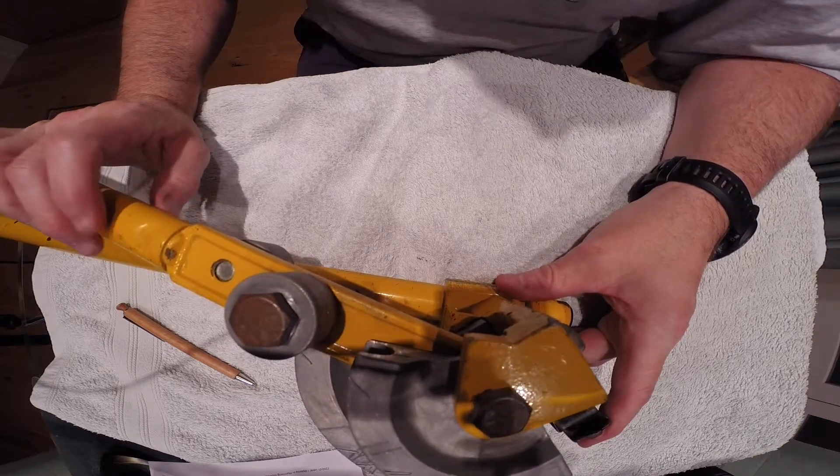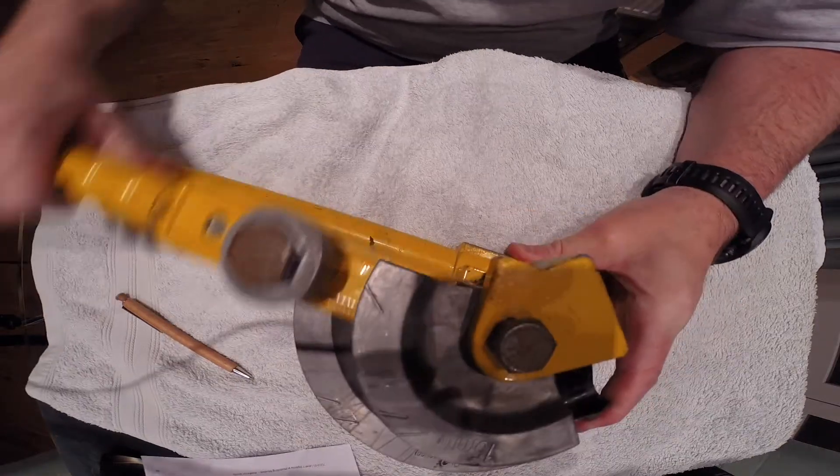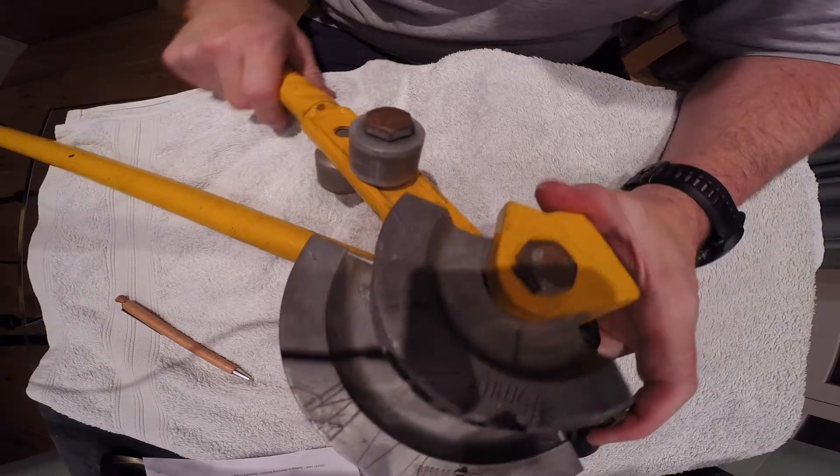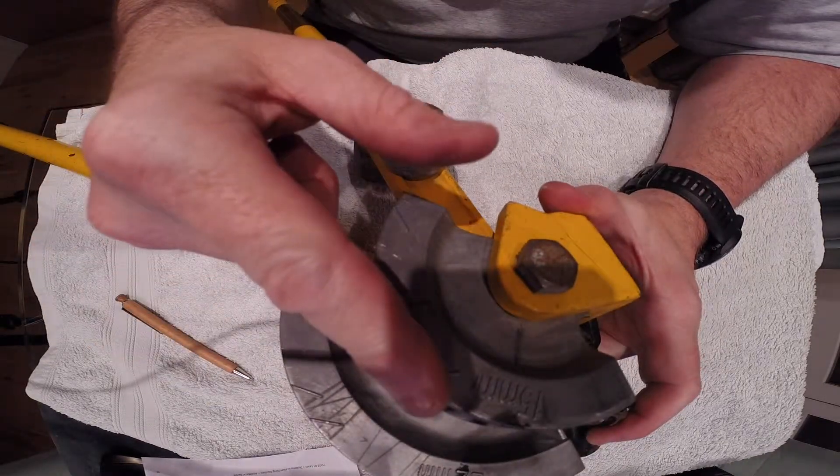Okay, here we have what's called a scissor bender. As you can see, it's a scissor where the arms move up and down. A couple of things to look at on this: these are called the formers, 15 mil and 22 mil.